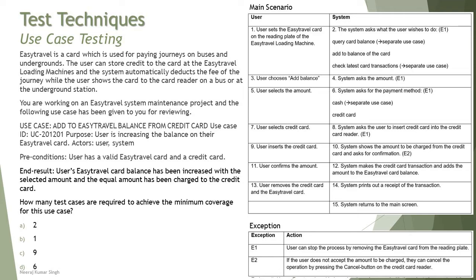Looking at the question: EasyTravel is a card used for paying journeys on buses and undergrounds. The user can store credit to the card at EasyTravel loading machines, and the system automatically deducts the journey fee when the user shows the card to the reader on a bus or at underground stations. You are working on the EasyTravel system maintenance project and the following use case has been given for review: 'Add to EasyTravel balance from credit card' - Use Case ID UC20120, purpose: user increasing the balance on their EasyTravel card. Actors: user and system.